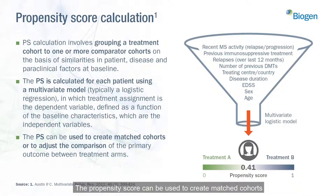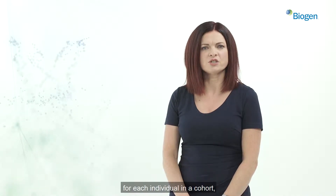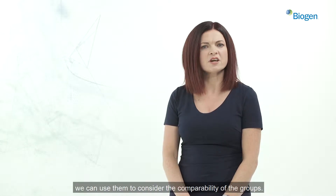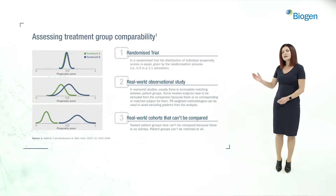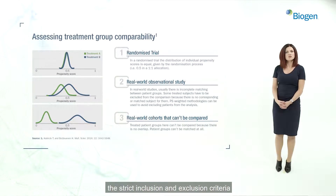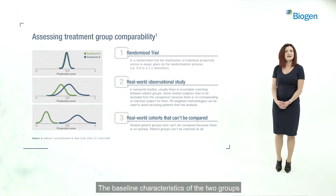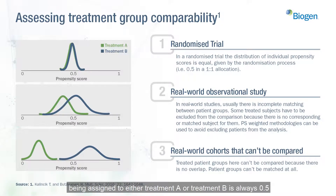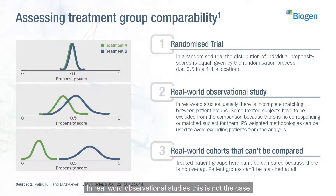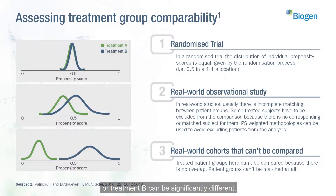The propensity score can be used to create matched cohorts or to adjust the comparison of the primary outcome between treatment arms. After propensity scores have been generated for each individual in a cohort, we can use them to consider the comparability of the groups. In a randomised control trial, the strict inclusion and exclusion criteria will correct for all known confounders, and the baseline characteristics of the two groups will have no significant differences. In real-world observational studies, this is not the case — the baseline characteristics of groups receiving treatment A or treatment B can be significantly different.